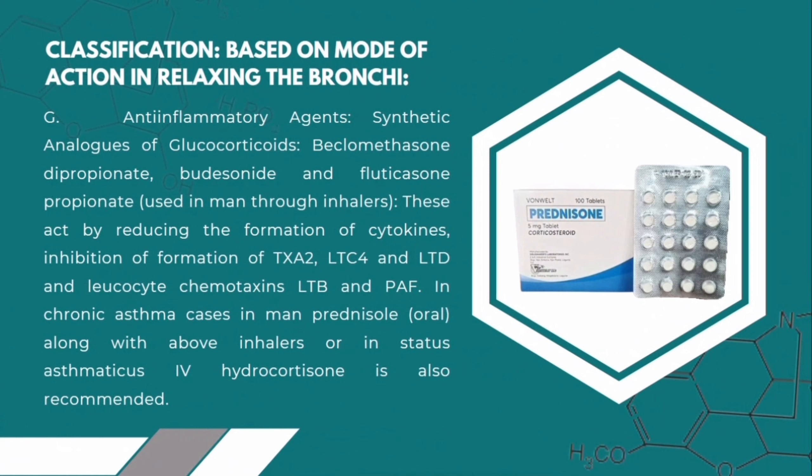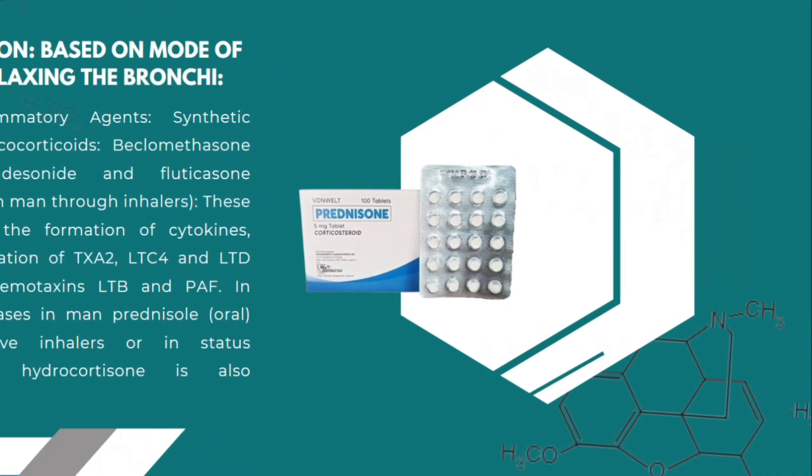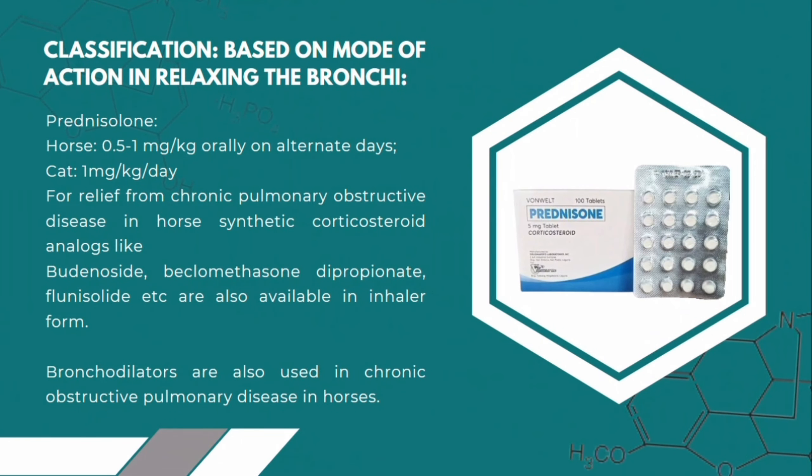In severe status asthmaticus, IV hydrocortisone is also recommended. Prednisolone is used in horses at 0.5 to 1 mg per kg only on alternate days. In cats it is used at 1 mg per kg per day. For relief from chronic obstructive pulmonary disease in horses, synthetic corticosteroid analogs are used.